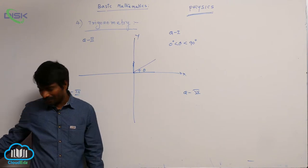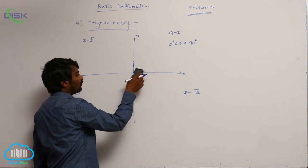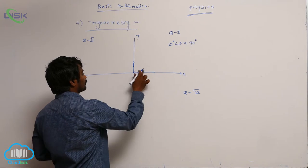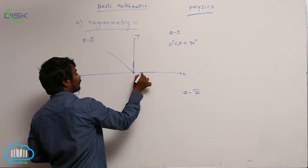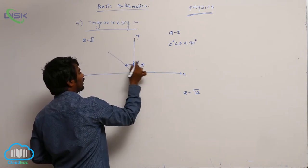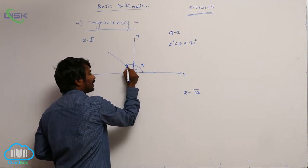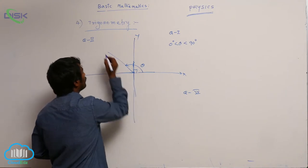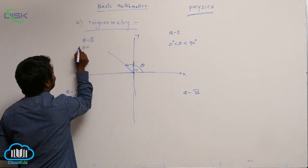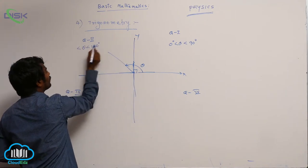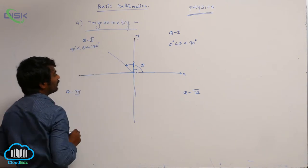The same way, if theta is greater than 90 degrees and less than 180 degrees, it is in the second quadrant.